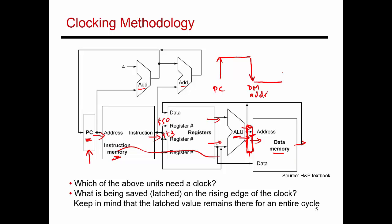For that entire second half cycle, the data memory unit has a stable input, reads the required value, and produces a result that loops back to the input of the register file. At the next rising clock edge, the PC gets updated and the register write is performed. So there are three units that have clocks: the latch before the instruction memory (the program counter), the latch before the data memory unit, and the register file itself — which is a set of latches that can only be written at every rising clock edge.